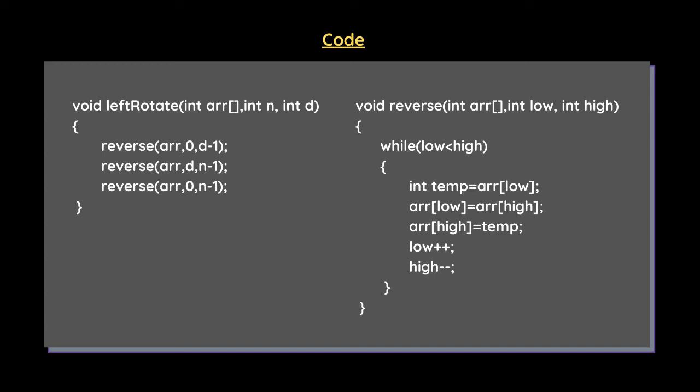In the second call, we pass d and n-1, so from index d to n-1 we reverse all elements. In the third call, we pass 0 and n-1, reversing all elements from index 0 to the last index. The reverse function itself is implemented in O(n) time complexity — it takes an array, a low, and a high value.